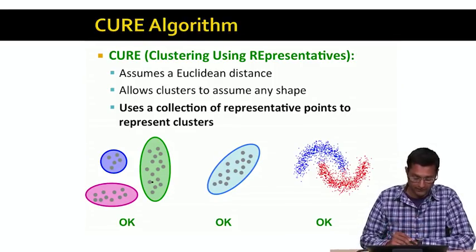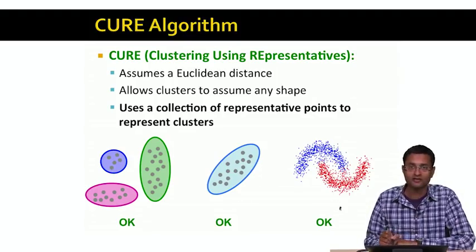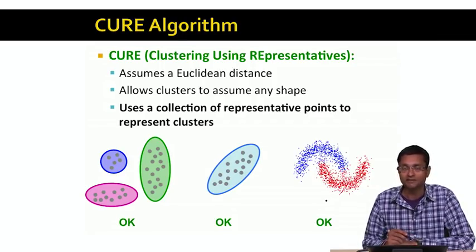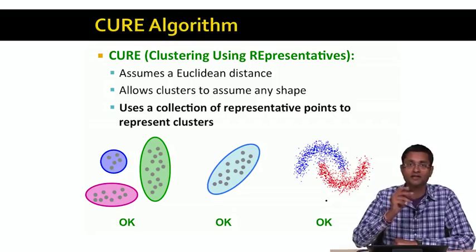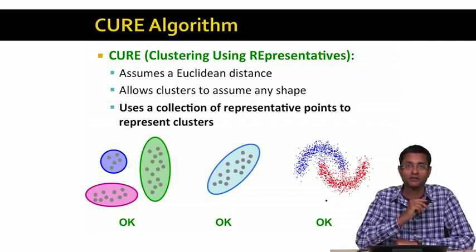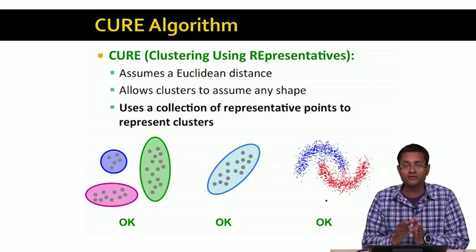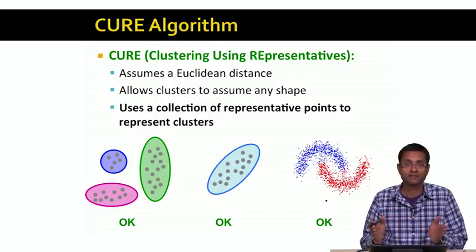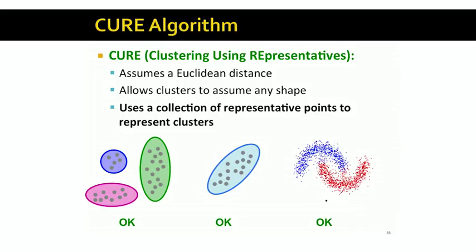In the CURE algorithm, any of these cluster shapes — the first, the second, or the third — are perfectly fine. The CURE algorithm can find clusters of those shapes. The key difference between CURE and BFR is that in the BFR algorithm, we represented each cluster using its centroid. Whereas in the CURE algorithm, instead of a centroid, we're going to represent each cluster by a collection of representative points. So instead of representing a cluster by one point, we're going to represent it by many points.